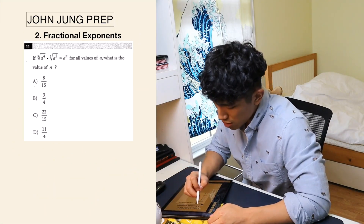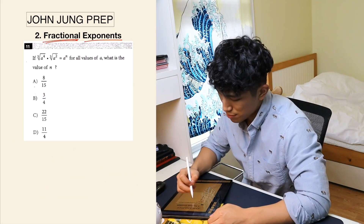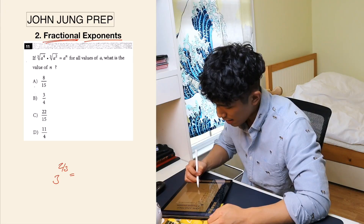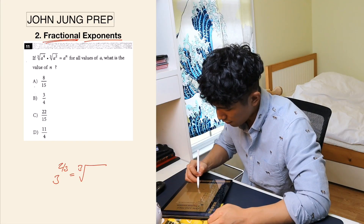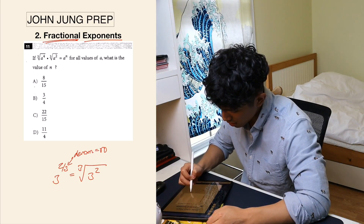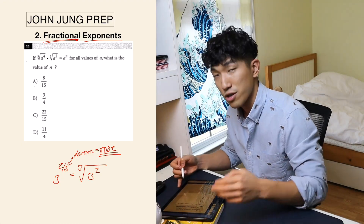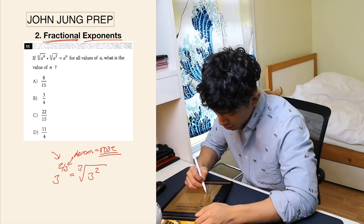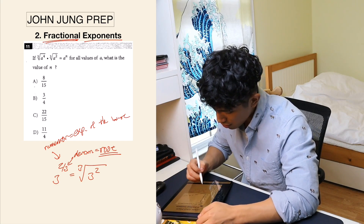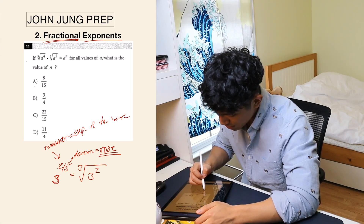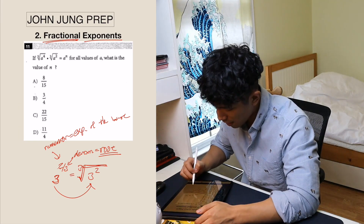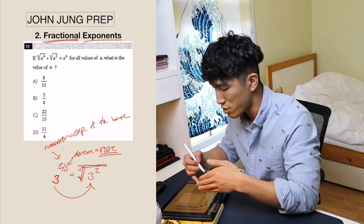The second type is fractional exponents. For example, 3^(2/3) can be rewritten as the cube root of 3 squared. The denominator of the fractional exponent is your root — if it's 3, it's a cube root; if it's 2, it's a square root. And the numerator is the exponent applied to the base. So if the numerator is 2, our base of 3 gets squared, and it sits under the radical.